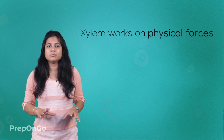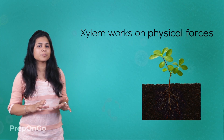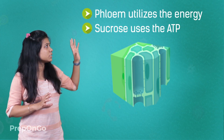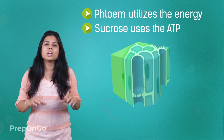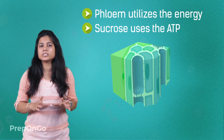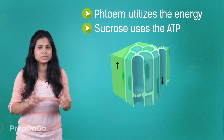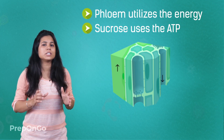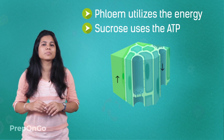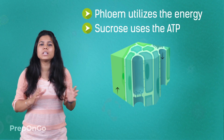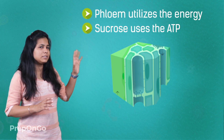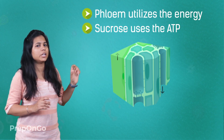Unlike xylem, which works on simple physical forces, phloem achieves its function by utilizing energy. When sucrose enters into the phloem, it utilizes ATP energy. ATP is a similar molecule found in humans, and the function of ATP in both is the same — storing of energy. Wherever and whenever the plant needs energy, it breaks down the ATP molecule.